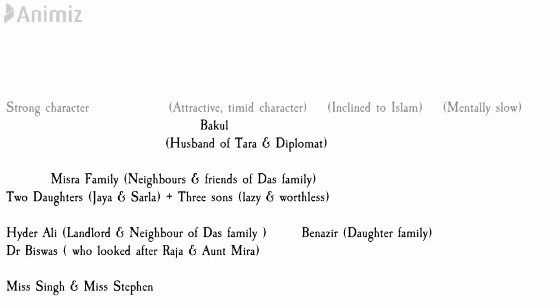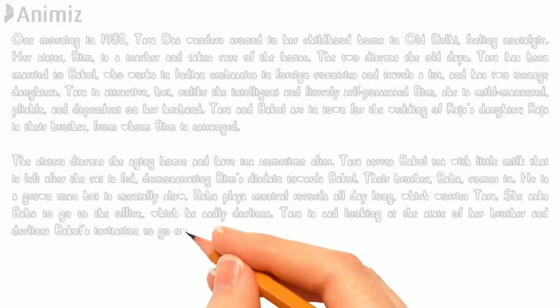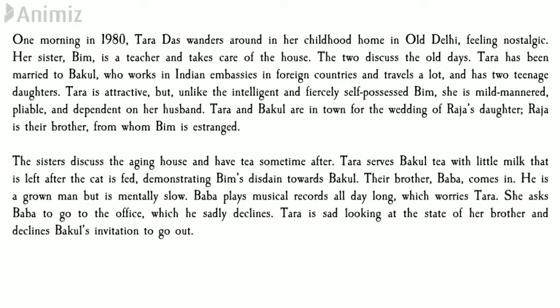The first part starts on a fine morning in 1980 where we see Tara Das wandering around her old home in Old Delhi. Tara Das is married to Bakul, an Indian diplomat who works in embassies and travels a lot around the world. Tara and Bakul have two daughters and have come to India to attend the marriage ceremony of Raja Das's daughter. So the novel starts with the present scenario. The novelist here has used analepsis — we'll see that in the next part.